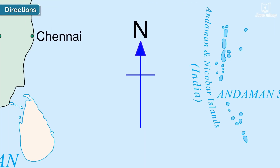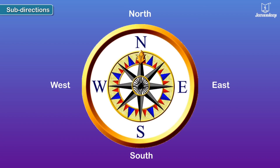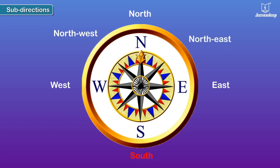Most maps show north at the top. Once the position of north is known, it is much easier to identify the other directions. South is directly opposite to north. When facing north, west is to our left side and east is to our right side. The sub-directions are: north-west, north-east, south-east, and south-west.